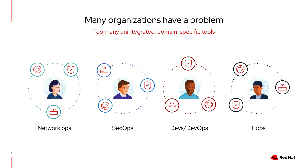A lot of times organizations are operating with all these different silos. You might have a network team, a server team, a DevOps team, tooling team, SecOps, and so on. The usual next step is that they want to adopt automation, but what happens is these silos adopt automation still in silos — that's usually how it progresses.